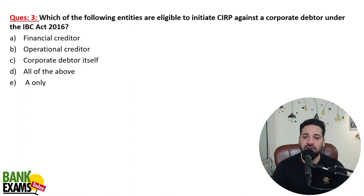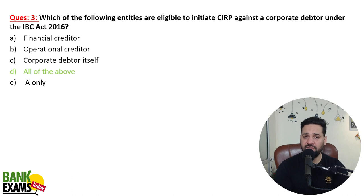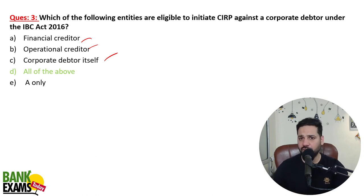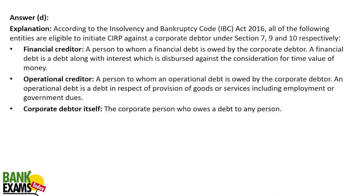Which of the following entities are eligible to initiate CIRP — Corporate Insolvency Resolution Process — against a corporate debtor under IBC Act 2016? Financial creditors, operational creditors, and the corporate debtor itself are eligible for CIRP. Pre-packaged insolvency has a different procedure, different methods, and a different time frame. Please go through that — it will help you for sure. Let me just hide myself so that you can read the entire slide.